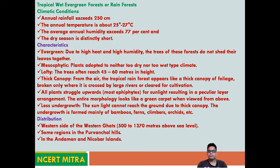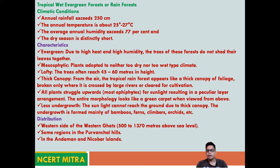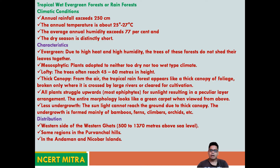Most underground trees include bamboos, ferns, climbers, and orchids. Distribution of this vegetation includes the western side of the Western Ghats, from sea level up to 500 to 1,300 meters above sea level. It is also found in the Purvanchal region of northeast India — the seven sister states: Mizoram, Nagaland, Tripura, Arunachal Pradesh, Meghalaya, and Assam — including the Mizoram, Khasi, Naga, and Jaintia hills.